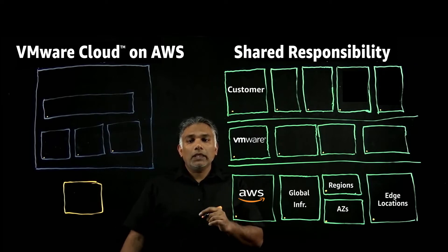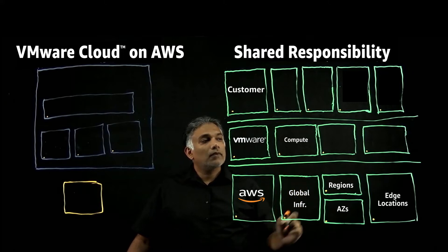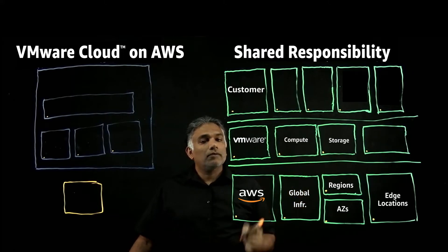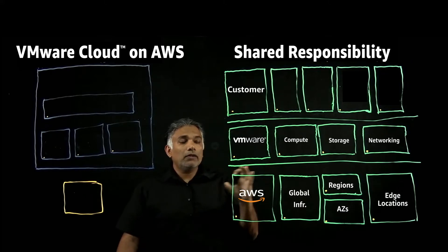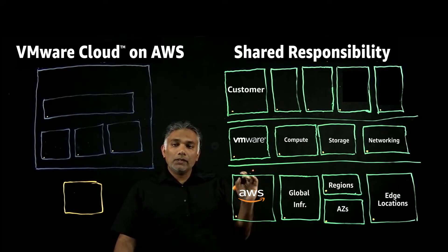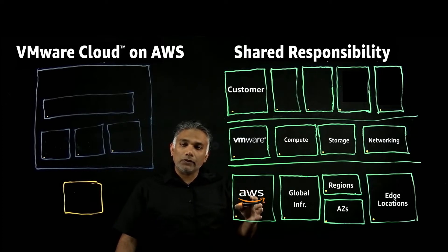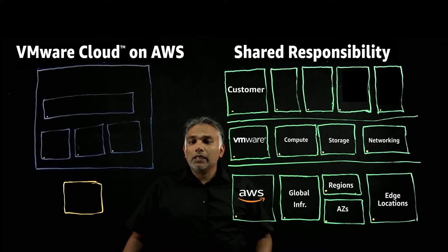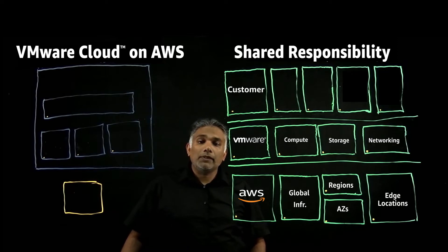VMware's responsibility for the VMware Cloud operating on AWS service consists of the compute, storage, and networking components. They ensure that all these components are optimized and working properly. There are cases where VMware needs to engage AWS to ensure support on the physical infrastructure, so VMware will reach out to AWS to keep the customer environment as operational and optimized as possible.